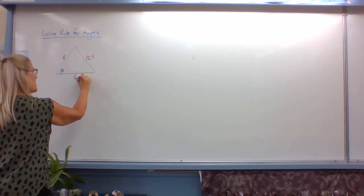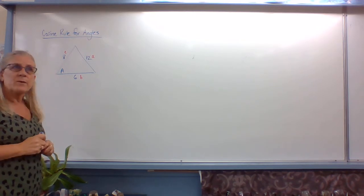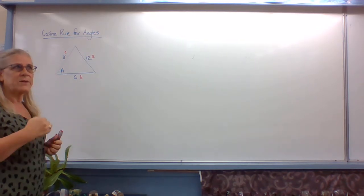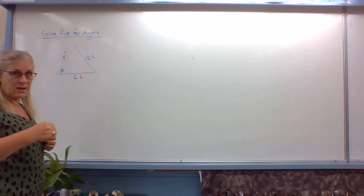So A is opposite and it doesn't matter which of the other two. So yesterday with the cosine rule, we had A squared equals B squared plus C squared minus 2BC cosine A.